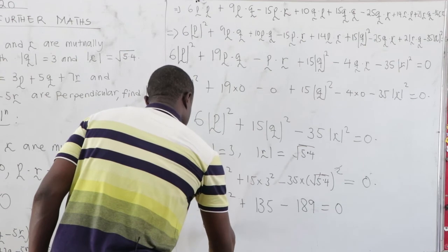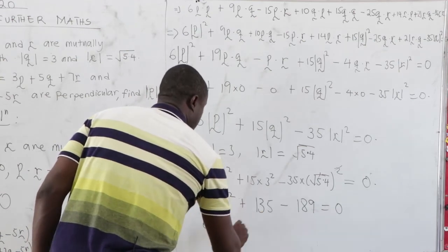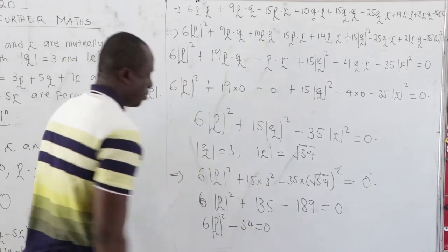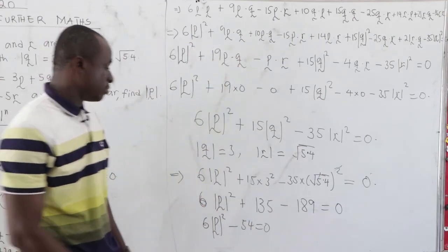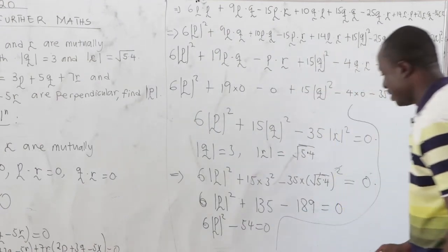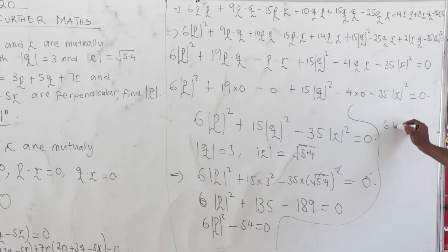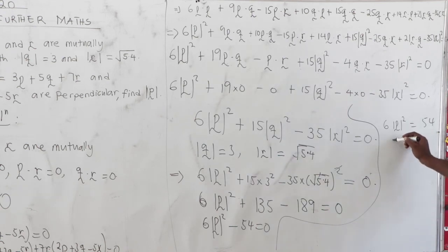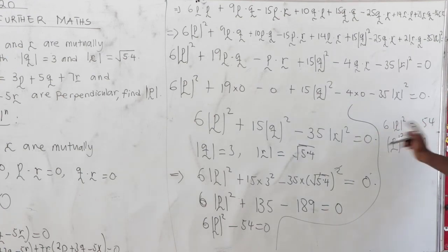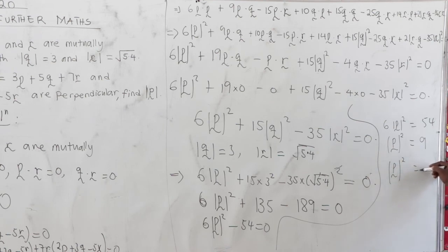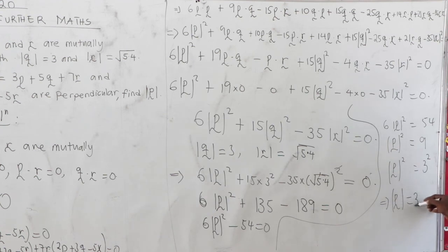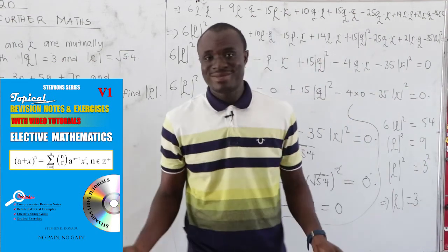So we have 6 times magnitude of P squared minus 54 equals 0, since 135 minus 189 equals negative 54. Therefore 6 times magnitude of P squared equals 54. Dividing both sides by 6, magnitude of P squared equals 9, which is 3 squared. So the magnitude of P equals 3. That is very trivial. Don't forget to subscribe and share the links with your friends.